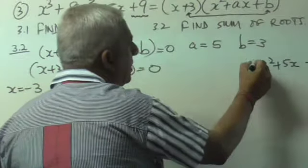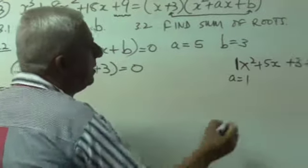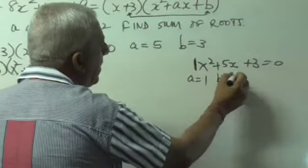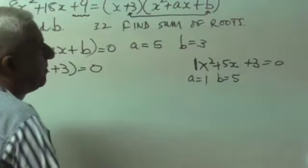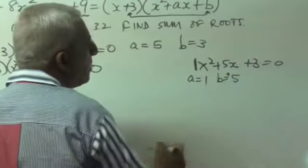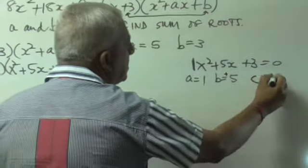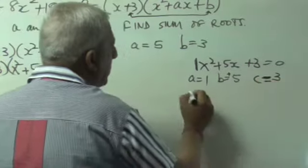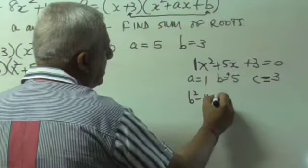So, a is 1. You know that the number in front of x squared is 1. b is 5. The number in front of x is 5. Always take it with the signs, plus 5. And c is 3. So, what you do, you work out b squared minus 4ac.